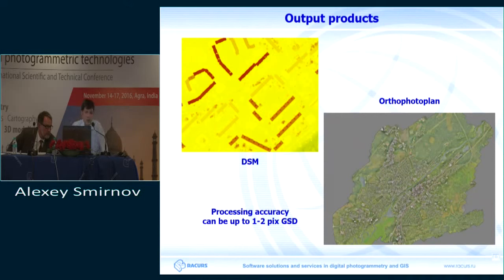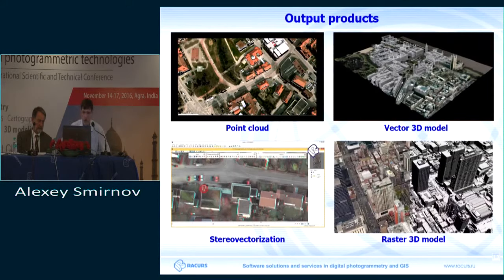The main output products are the same as with other kinds of surveying: DSM and orthophoto plans. If you use UAS correctly, you can get 1–2 pixel accuracy in all programs. Other trends include point cloud, vector 3D models, raster 3D models — classical orthophoto stretched over a relief matrix — and stereo vectorization, giving you a 3D map with height objects.